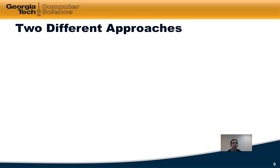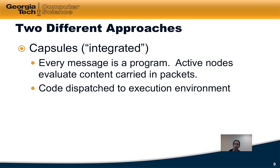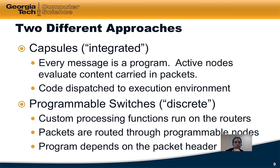There are two different approaches to active networks. The first, more extreme approach was that every packet actually carried a program, and active nodes along the network path would evaluate that code carried in the packet — dispatching it into an execution environment running on a programmable switch or router. These are called capsules. The other approach looks much more familiar and almost like SDN: programmable switches where code would be installed, and those switches would perform custom processing functions on packets depending on values in the packet header fields. Packets would be dispatched to the appropriate code block depending on header values — which sounds a lot like SDN.